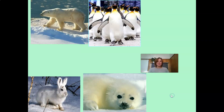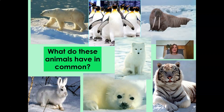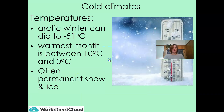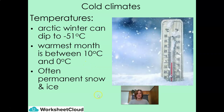Now let's take a look at these animals. What do you think they have in common? They all have very similar characteristics — they all come from colder climates. They are generally Arctic animals. They have temperatures in the winter which can dip to minus 51 degrees Celsius. The warmest month for them is generally between 0 and 10 degrees Celsius. There is often permanent snow and ice, so you have to be specifically adapted to survive in this kind of habitat and climate.